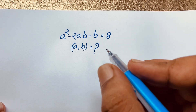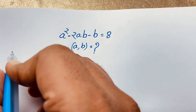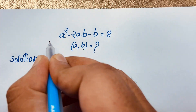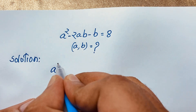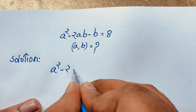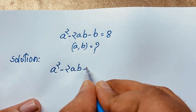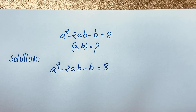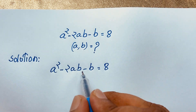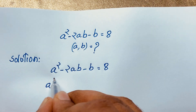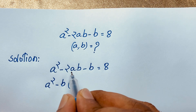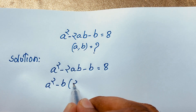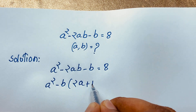Now first of all, our question is a² minus 2ab minus b equals 8. You can see here that b is common. So if I take negative b as common outside a bracket, then inside it will be a² divided by b giving a², and then minus minus gives positive 2a, minus minus gives positive 1.